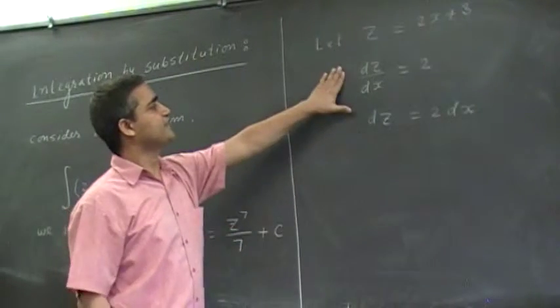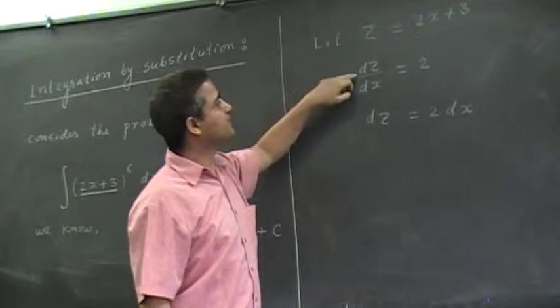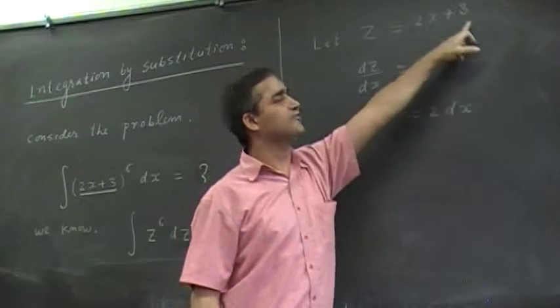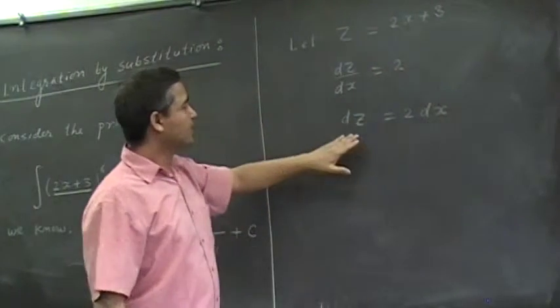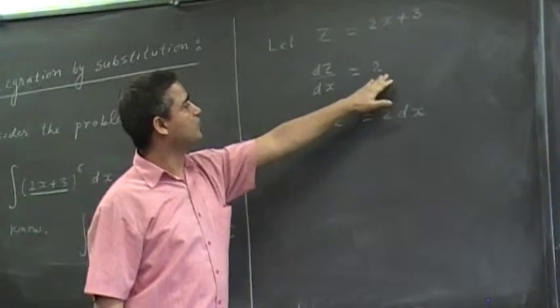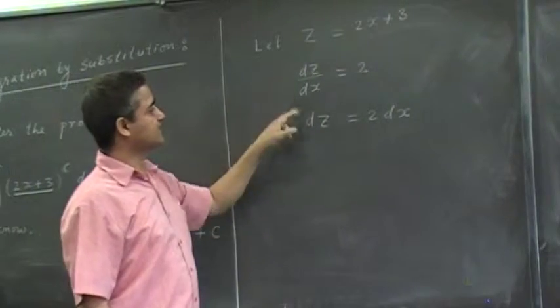This is differentiating both sides with respect to x. dz over dx, derivative of 2x is 2, derivative of 3 is 0, right? And, I multiplied both sides by dx, so dz is 2dx.